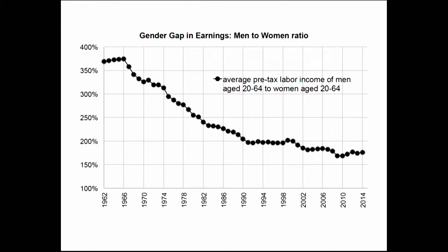Let me start by showing a very simple comprehensive gender gap measure: the average pre-tax labor income of all men aged 20 to 64 — that is, the broad working-age population including zeros, so if you don't work you are a zero — divided by the same average for women, also including non-workers. That ratio was huge back in the 1960s, above 3.5. That is, men on average were making 3.5 times more in earnings than women. Then it declined steadily starting in the mid-60s into the 70s and 80s, so that by 1990 you are at a ratio of two — on average, men make twice as much as women.